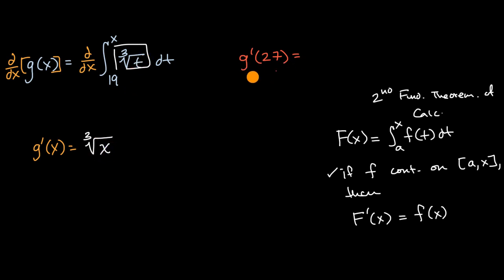And so we can go back to our original question. What is g'(27) going to be equal to? Well, it's going to be equal to the cube root of 27, which is, of course, equal to 3. And we're done.